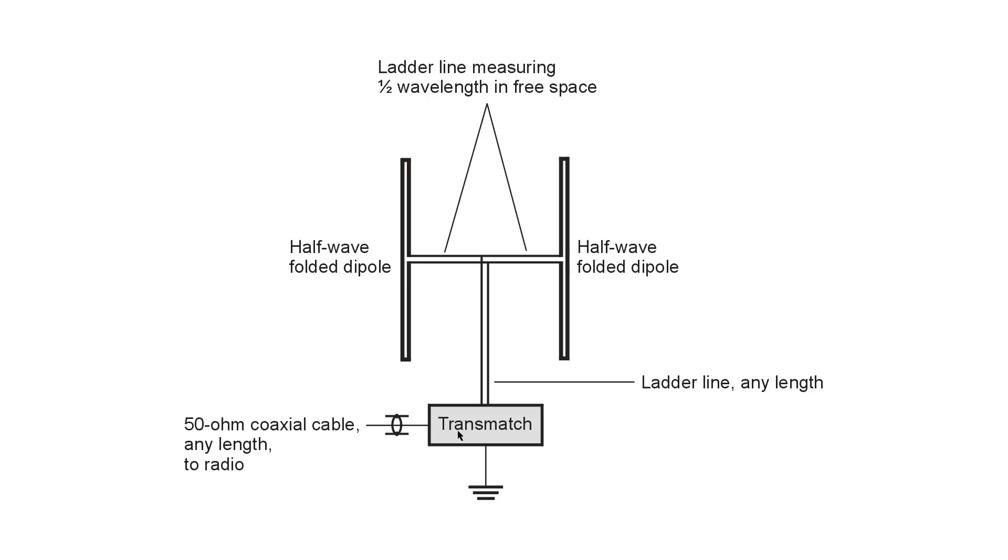And it would be nice if this were an automatic antenna tuner. But failing that, you can put your station right here and do away with having to have any coaxial cable run to your station. But from there, you can run any length of 50 ohm coaxial cable to your radio.